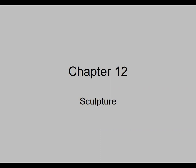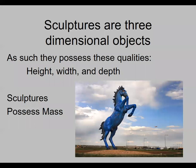Sculpture is a three-dimensional medium, where drawing, printmaking, photography, and painting are all two-dimensional mediums. Sculptures are three-dimensional objects possessing height, width, and depth, and they also possess volume and mass — not the illusion of it, but actual volume and mass.